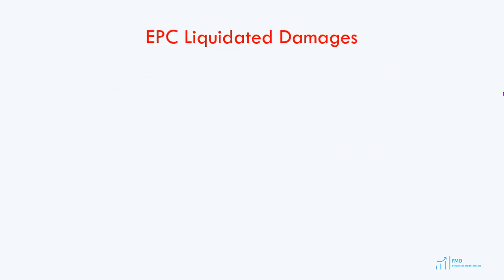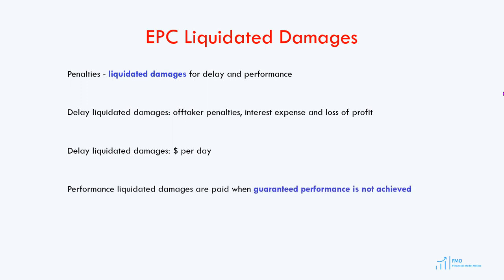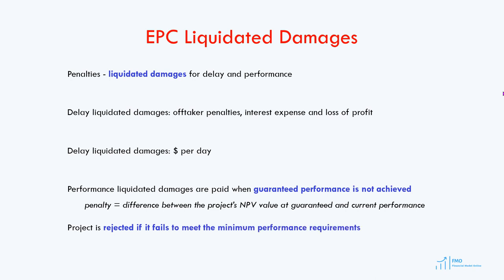Another distinctive feature of the EPC contract is delay and performance penalties, called liquidated damages. Since the EPC contract is date certain, if there is a delay in construction, all penalties owed by the sponsor to third parties will be paid by the EPC firm. Delay damages include penalties paid to the off-taker, debt costs paid to the lender, and loss of profit suffered by the project company due to the delay. Delay liquidated damages are based on a dollar-per-day calculation. In addition, there will be performance liquidated damages if the project does not achieve the guaranteed performance level — typically calculated as the difference between the value at the guaranteed performance level and the actual performance level. The project company has the right to reject the project if it does not achieve the minimum performance level, and a typical penalty for rejection is reimbursement of all cash payments made to the EPC contractor.